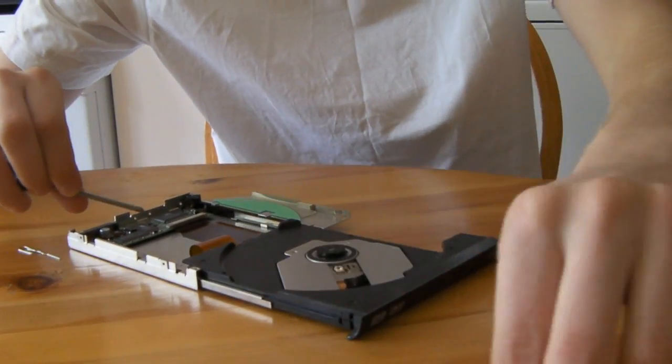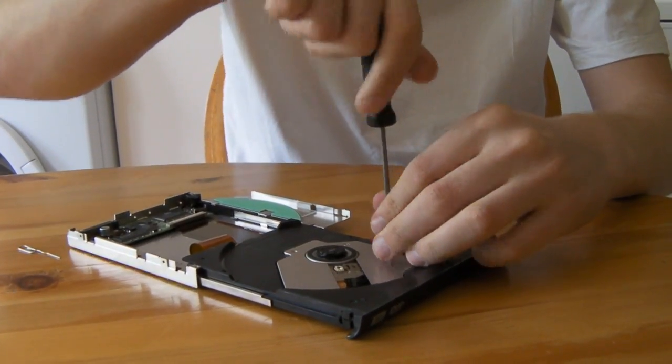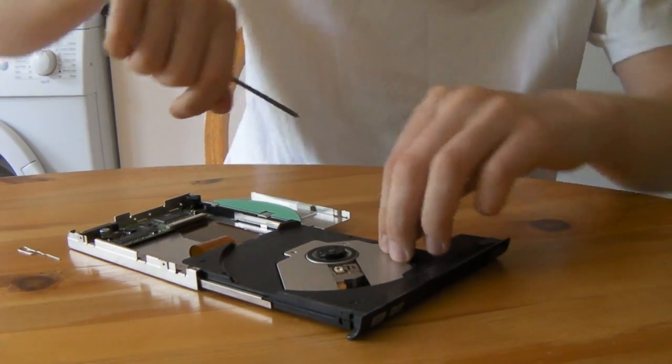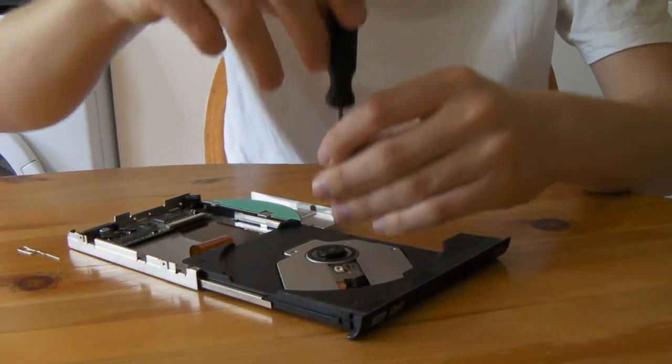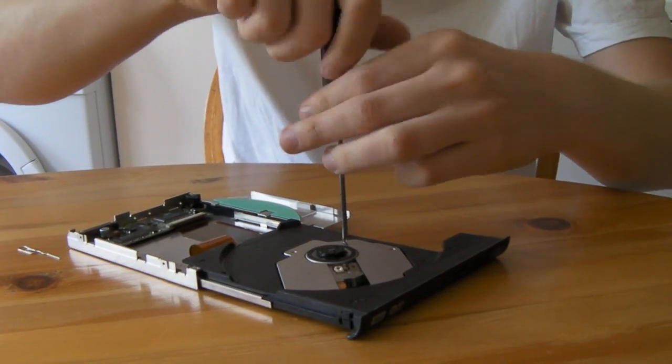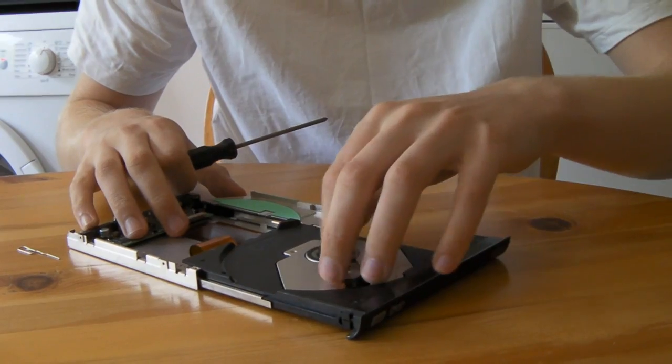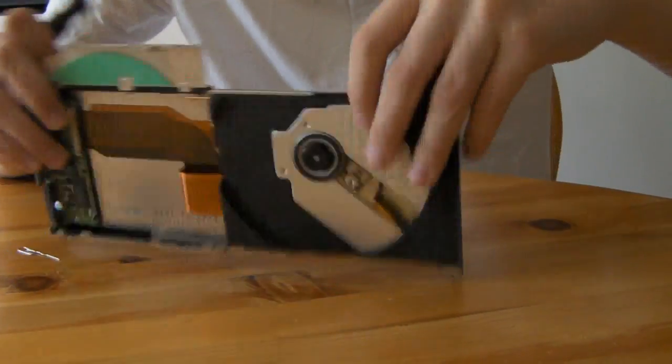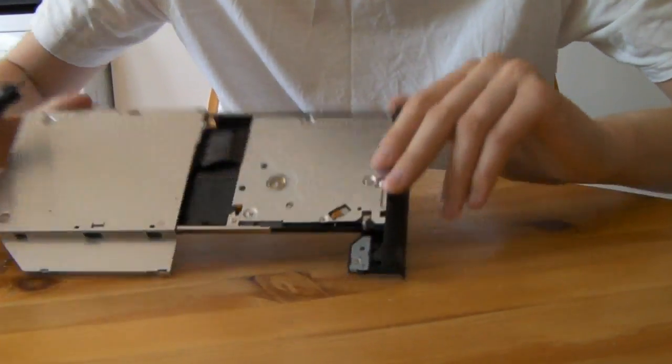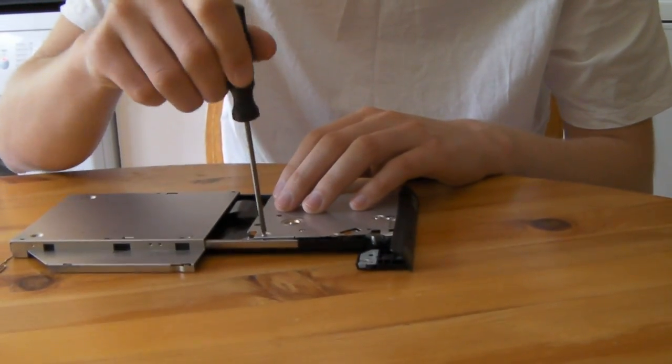So there's a few screws on the top, three or four, and there's some on the bottom as well which I'll get to in a second. You can see I'm getting the ones out the top at the moment. And what you can also see is the inside of the DVD burner. That white bit there you can see is where the laser comes out of, but it's not actually the laser itself.